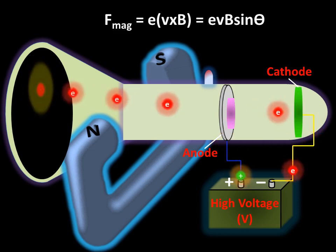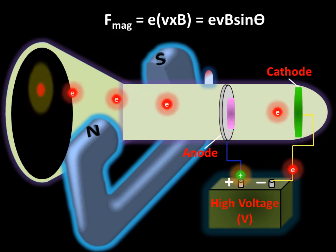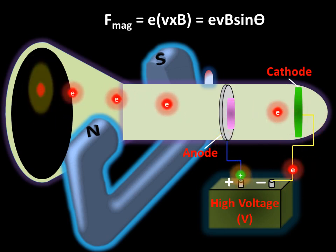Thomson then repeated his experiment using different materials as the cathode. He observed that the nature of cathode rays remained constant, no matter what cathode material they originated from. On the basis of these experiments, Thomson made some conclusions.